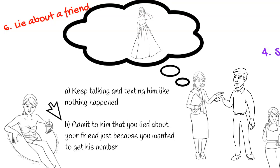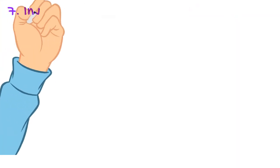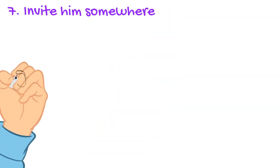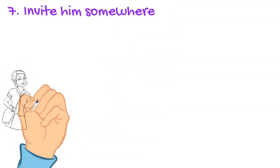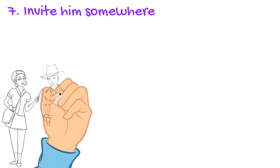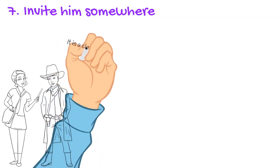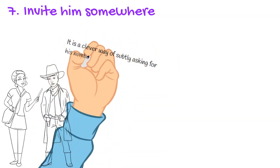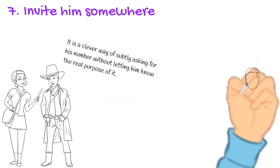My personal opinion is that the second option would be a much better bet. Seven: invite him somewhere. Invite him to a party or somewhere else, and he will have to give you his number because of the details regarding that event. It is a clever way of subtly asking for his number without letting him know the real purpose of it.